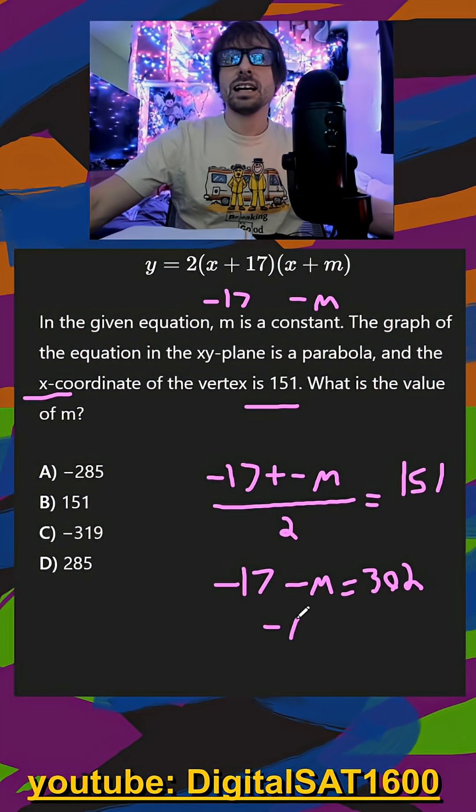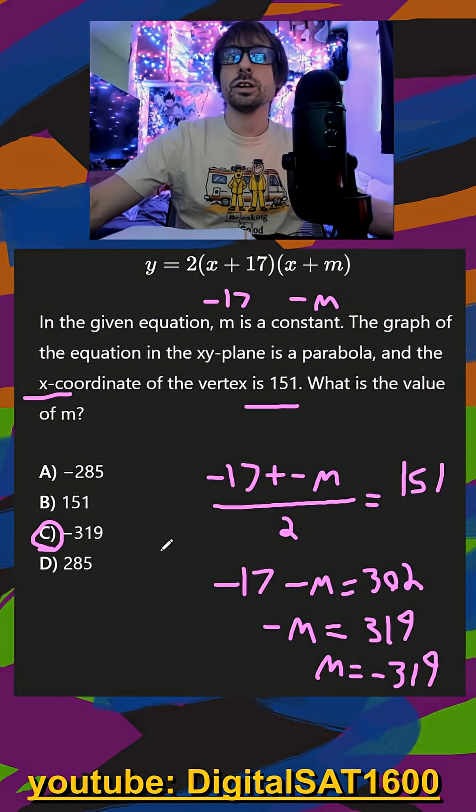Add the 17 to the other side, we get negative m is equal to 319. Or finally, that m is equal to negative 319. By far the fastest way you can do it. Make sure to remember all those little tricks.